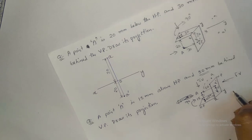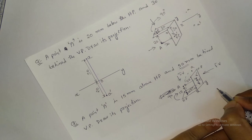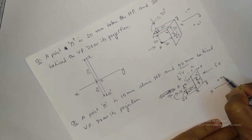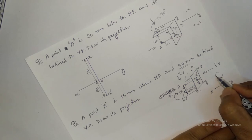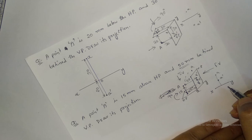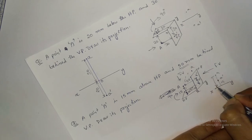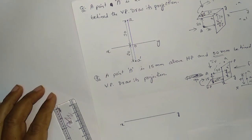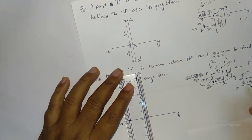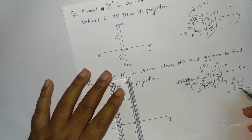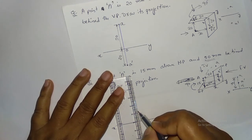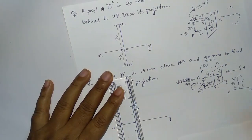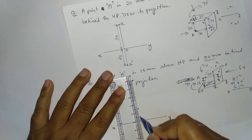After rotation, both front view and top view will be above the reference line XY. A-dash is 15mm above XY and top view A is 50mm above XY. I have drawn the XY reference line. Front view is 15mm above XY and top view is at 50mm. Join these lines with a 2H pencil.